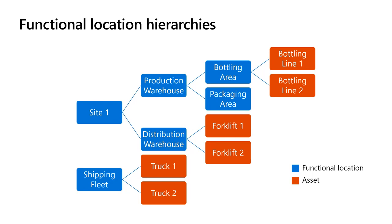It is possible to move assets from one functional location to another, but you can't change the functional location hierarchy itself after you set it up. We can add locations to the hierarchy, but we couldn't move existing locations around within the existing hierarchy. When you move an asset from one functional location to another, the cost of maintenance before the move stays attached to the original functional location — so asset costs are always related to the functional location where it was installed at the time the cost was incurred.